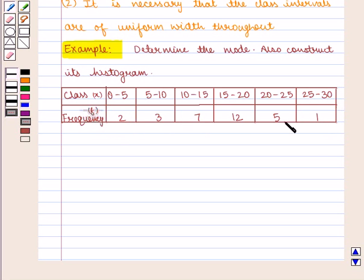Since the given series is regular, we can determine the modal class by inspection, which is equal to 15 to 20. Therefore, the modal class is 15 to 20.